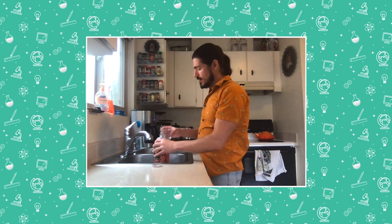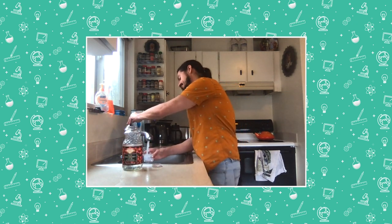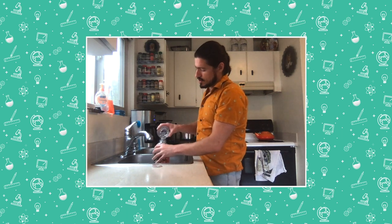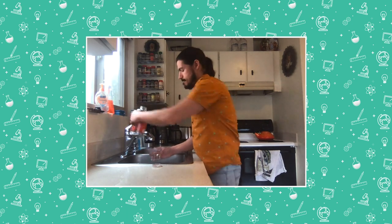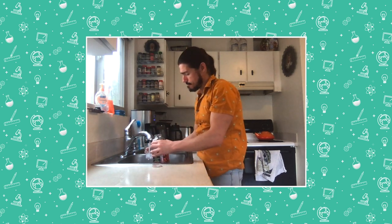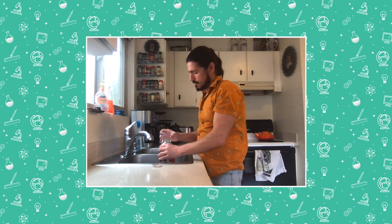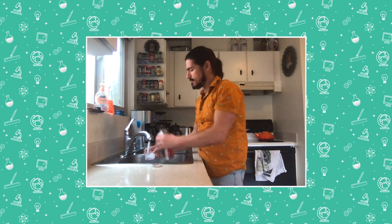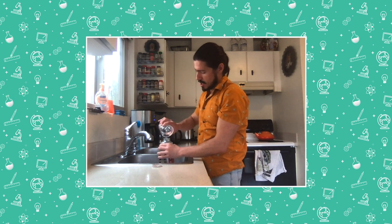I almost forgot we were going to find out how much juice I need to buy. Let's find out. There's one glass, two glasses, three glasses, four glasses, five glasses, and six glasses. So if I have a glass every single day, and I want enough for two weeks, six, 12, that doesn't quite take me to 14. I'm going to need to buy three bottles. Well, I better head off and get three bottles of cranberry juice. Bye everyone.